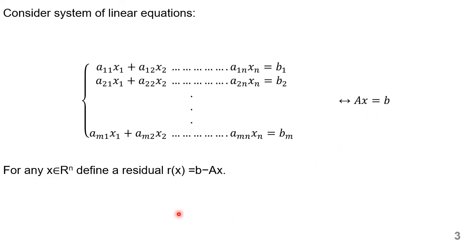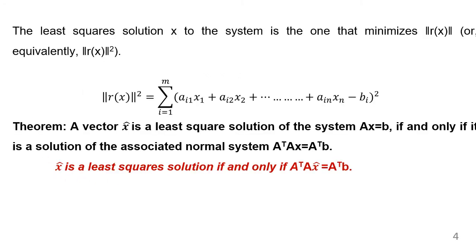The residual r(x) can be computed as b minus Ax, where x belongs to the n-dimensional space. The least square solution x̂ is found by minimizing the length of r(x), i.e., minimizing ‖r(x)‖.